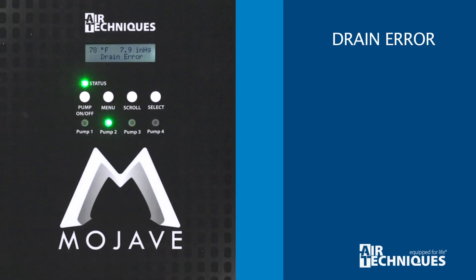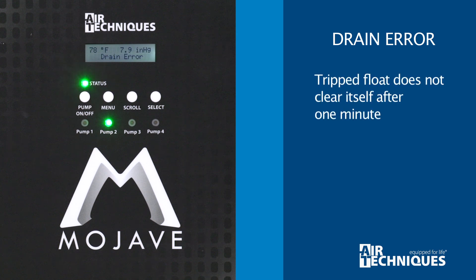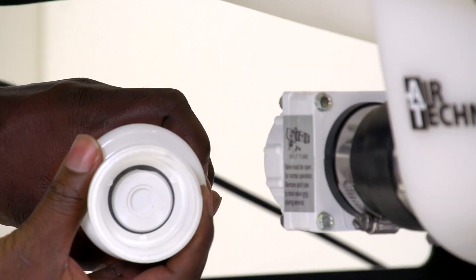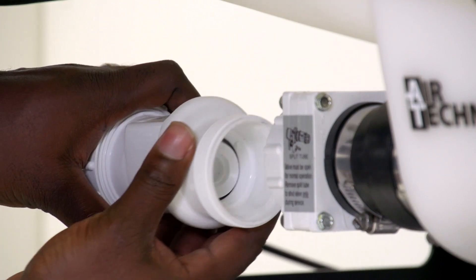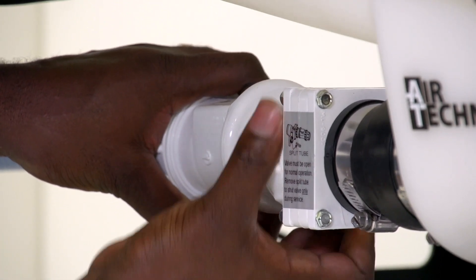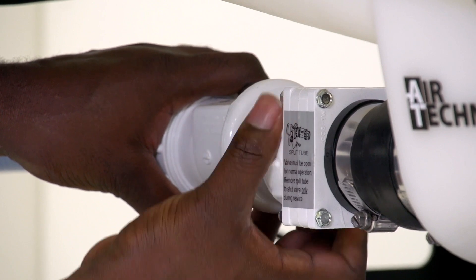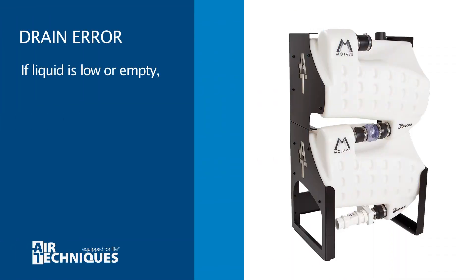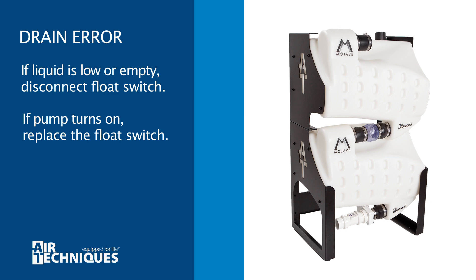The drain error occurs when a tripped float, which shuts all vacuum pumps off, does not clear itself after one minute. Check the liquid level in the tank. If it is high, ensure that the gate valve is open and the tank drain check valve is not clogged. Open the valve and/or fix the clog and allow one minute for the tank to drain — the pumps should turn back on automatically. If the liquid level is low or the tank is empty, disconnect the bottom float switch. If the pump turns on, the float switch must be replaced.